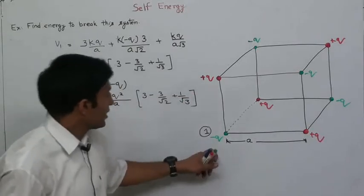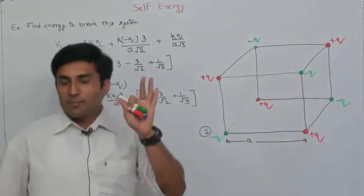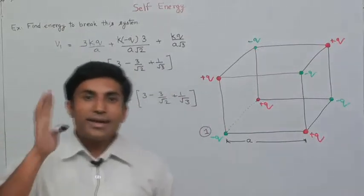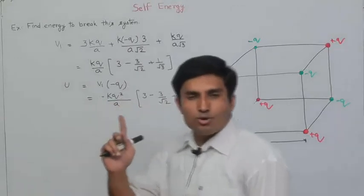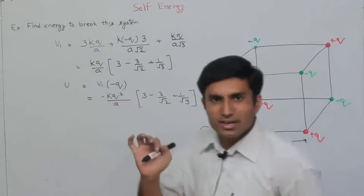Now similar is the case for all these points, so we have to multiply by 8. As we know, each interaction has been counted twice, so we have also multiplied by 2 in this method.